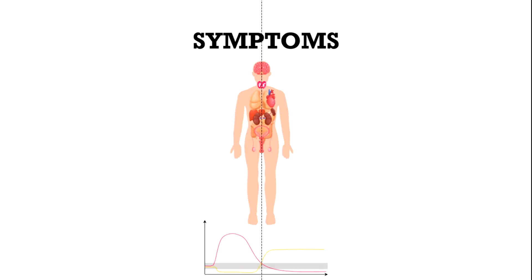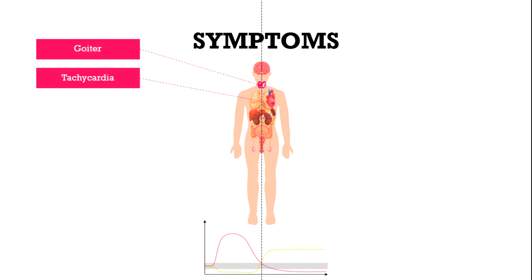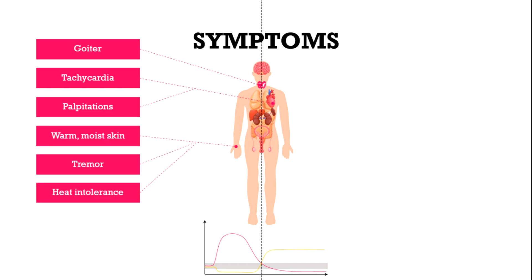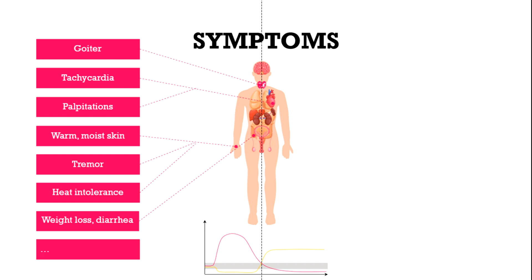Symptoms depend on the stage of the disease. With transient hyperthyroidism or hashytoxicosis, goiter, tachycardia, palpitations, warm moist skin, tremor, heat intolerance, weight loss, diarrhea, and more can be seen.